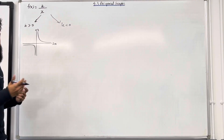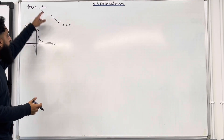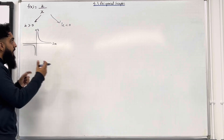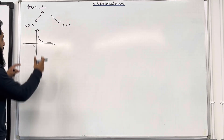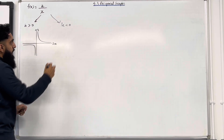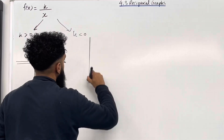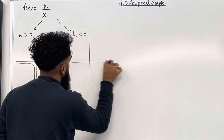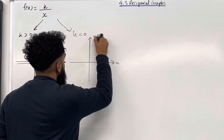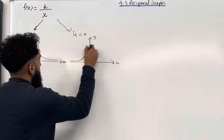Let's move on to k is less than 0, in other words when the numerator is negative. What will the graph look like for this case? Well, it's just going to flip over like that. Here is the shape of the graph. I've got my x and y axis and this is what the graph looks like.